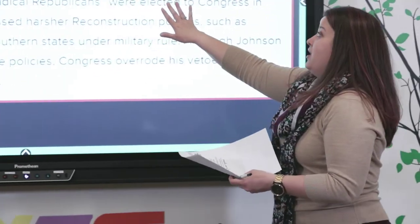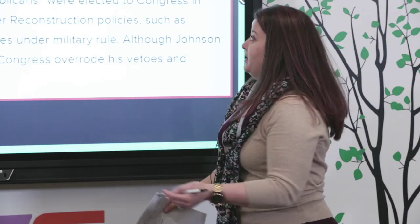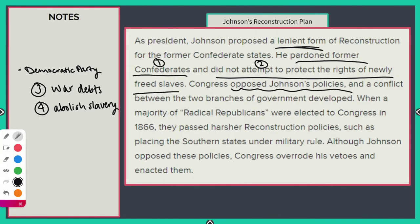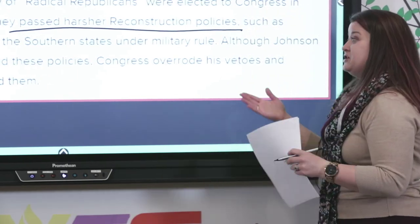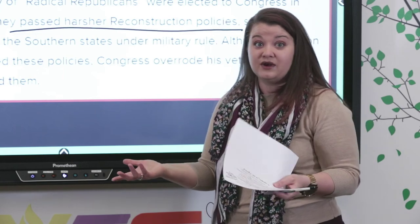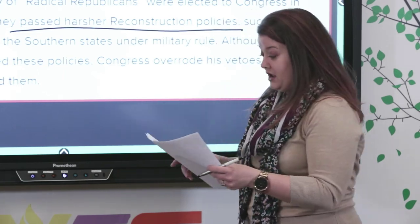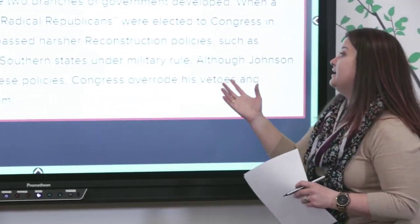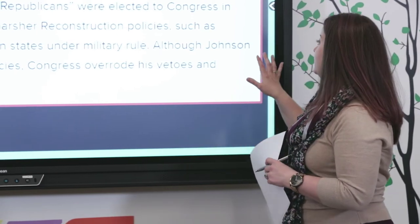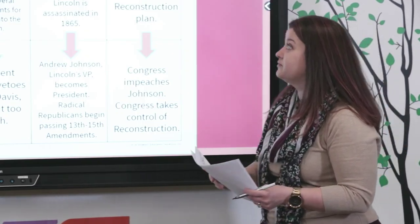Congress said that's not going to work for them and opposed his plan. In the end, a majority of Radical Republicans were elected to Congress, so they passed these harsher Reconstruction policies, including placing the southern states under military rule. Johnson continued to oppose them, but ultimately he got impeached. That's how Congress dealt with a situation where they felt it just wasn't enough — he wasn't leading in the way they felt was best.